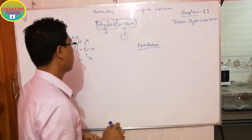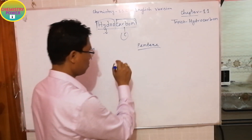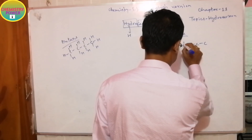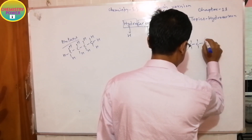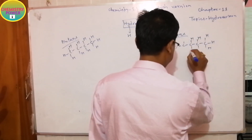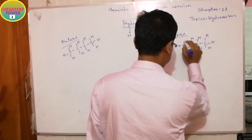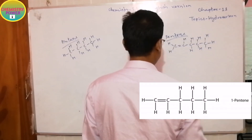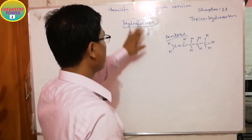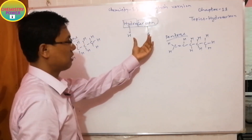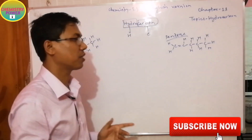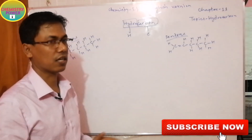Pentane is another hydrocarbon compound. You should also remember that in hydrocarbons, there can be carbon-carbon double bonds or carbon-carbon triple bonds, along with carbon-carbon single bonds.